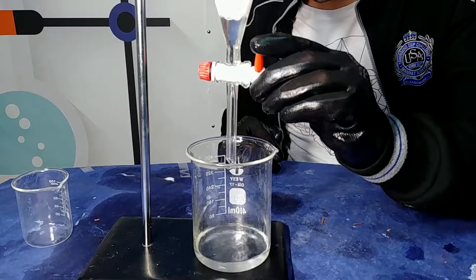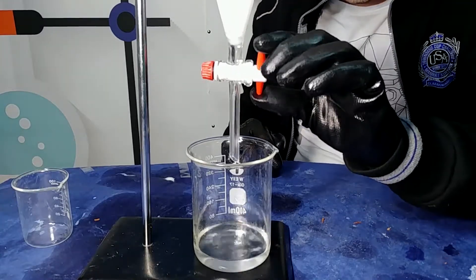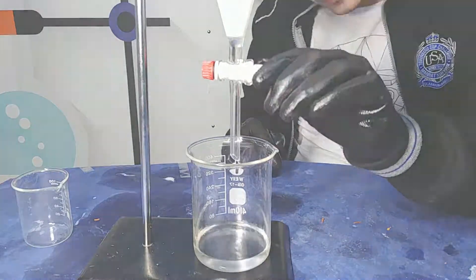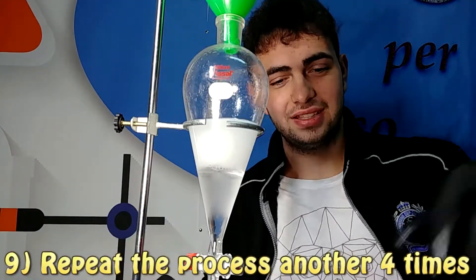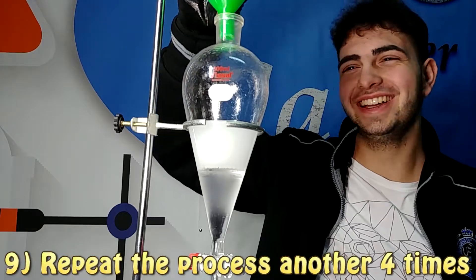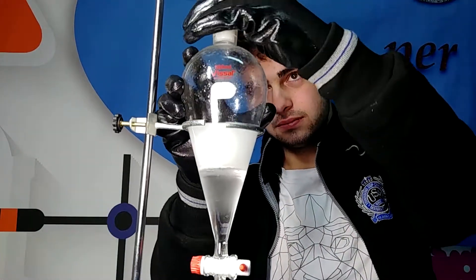After that we are going to repeat this procedure another four times and then we are going to gather all our dichloromethane in one beaker. So we know when we are done with our distillation process when the solution in our beaker is really clear.